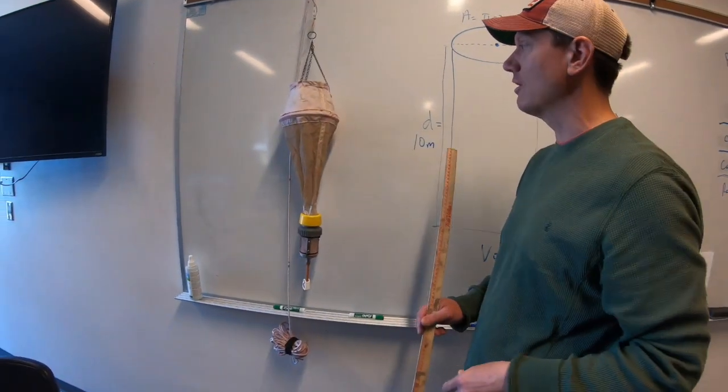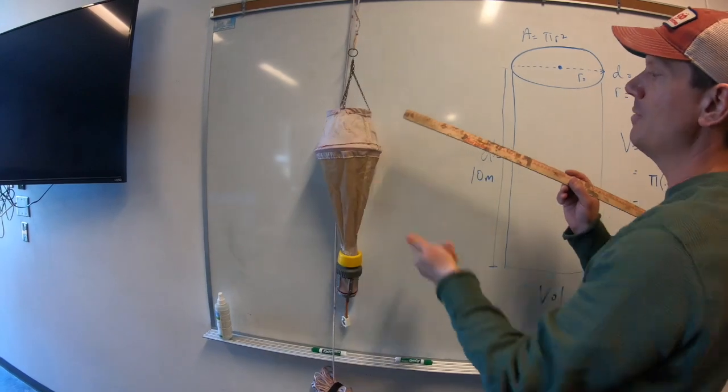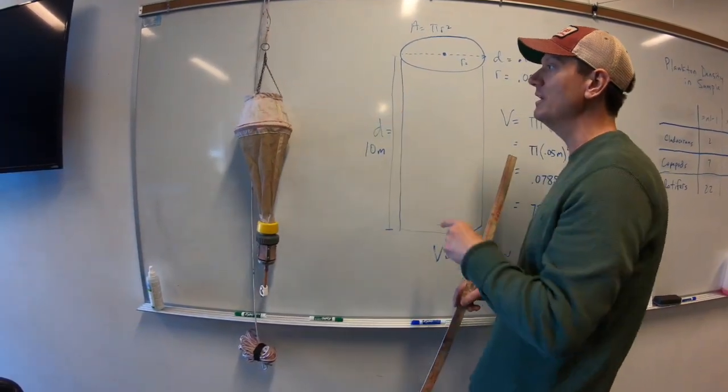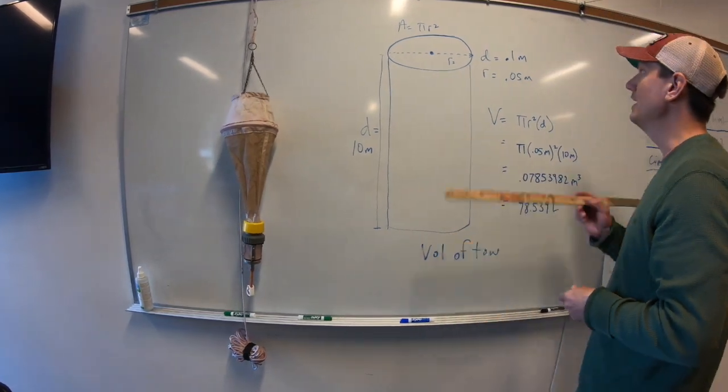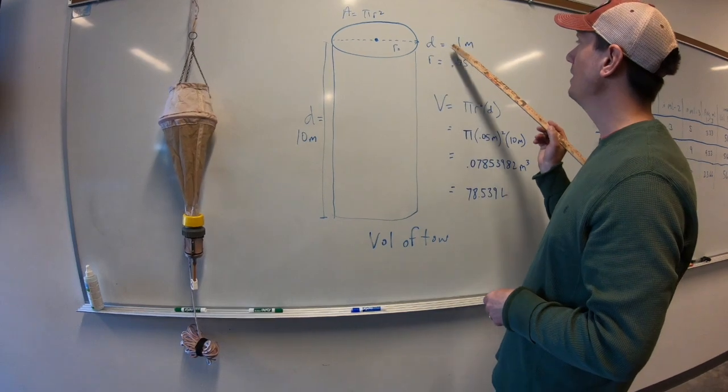First thing we need to know is what the aperture of the Wisconsin plankton net is. So the opening of the plankton net, measured it with a meter stick. We're going to keep everything in meters. So the opening of the Wisconsin plankton net is a diameter of 0.1 meters.